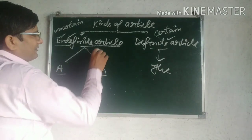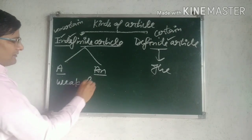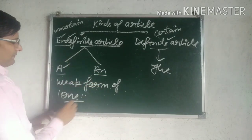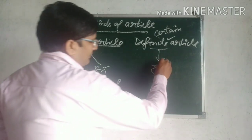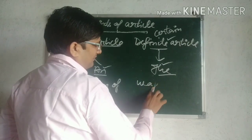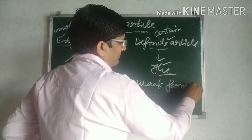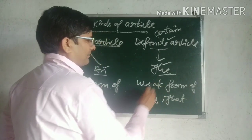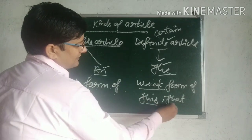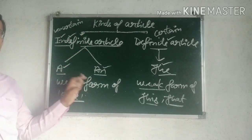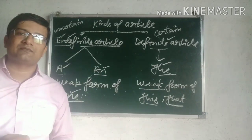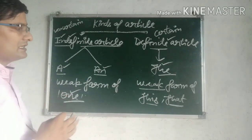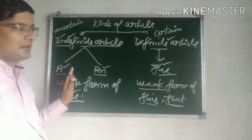A और An 'one' का brief form है. While 'the' is the brief form of 'this' and 'that'. जब भी A और An का use किसी noun के ठीक पहले होगा, it will make the position of noun indefinite or uncertain. And while 'the' is used before a noun, it will make the position of noun certain. I hope kinds of article आपका clear होगा.